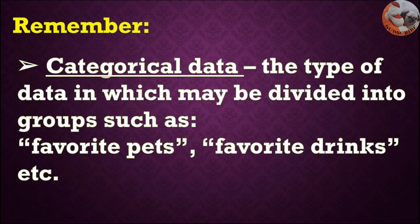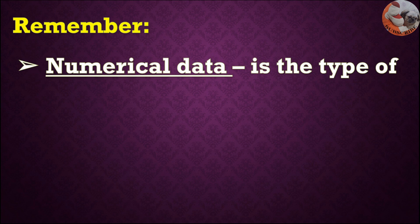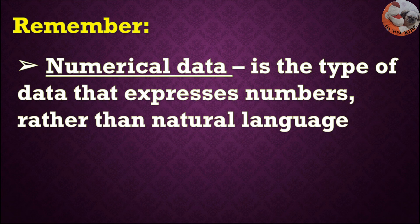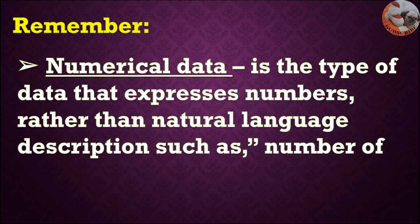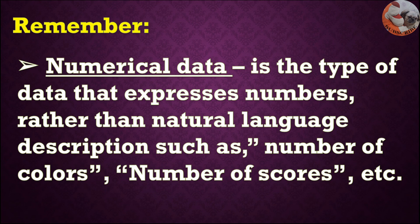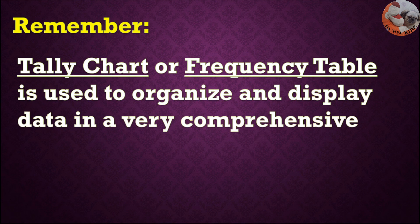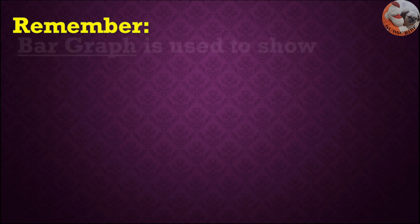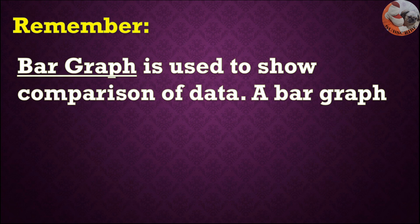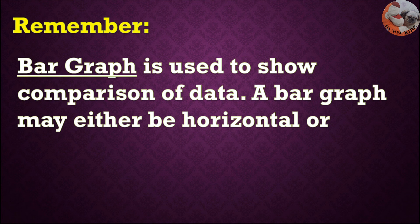Remember: categorical data are the type of data which may be divided into groups such as favorite pets, favorite drinks, etc. Numerical data is the type of data that expresses numbers rather than natural language description such as number of colors, number of scores, etc. Tally chart or frequency table is used to organize and display data in a very comprehensive way. Bar graph is used to show comparison of data. A bar graph may either be horizontal or vertical.